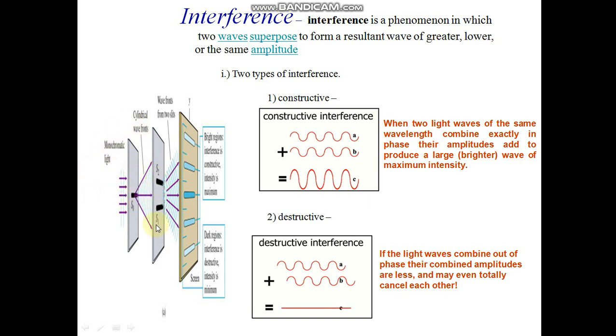Monochromatic light passes through slit 1 and slit 2. If two waves are the same wave, this is the destructive interference. The destructive interference occurs when two light waves combine.